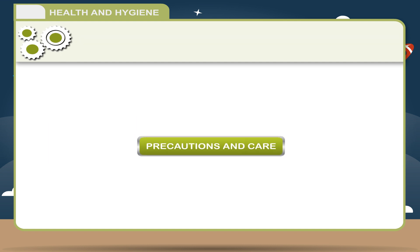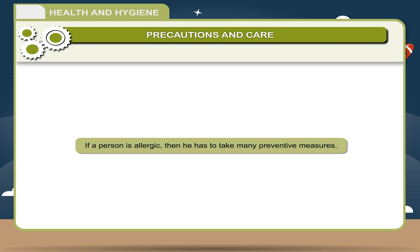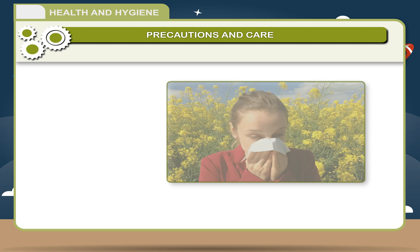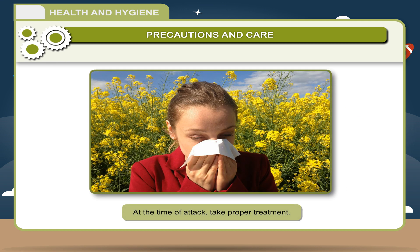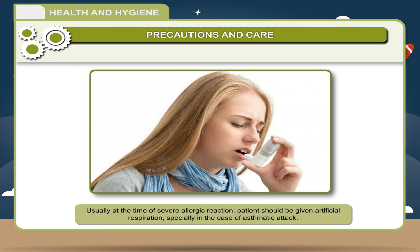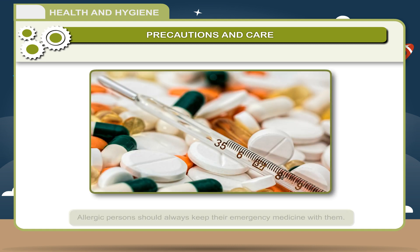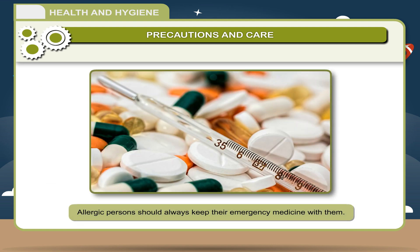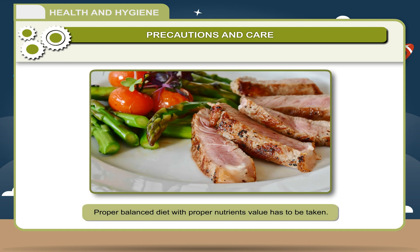Precautions and Care. If a person is allergic, he has to take many preventive measures. At the time of an attack, take proper treatment. Usually at the time of a severe allergic reaction, the patient should be given artificial respiration, especially in the case of an asthmatic attack. Allergic persons should always keep their emergency medicine with them. A proper balanced diet with proper nutrient value has to be taken.